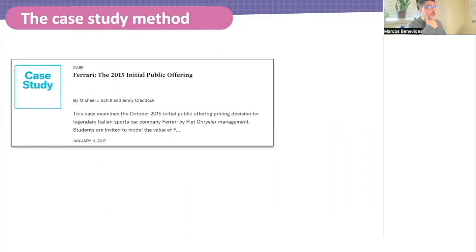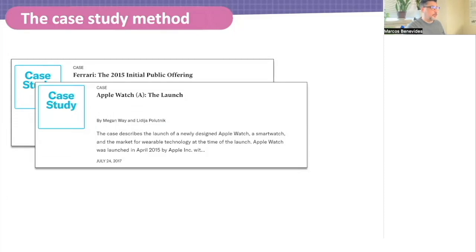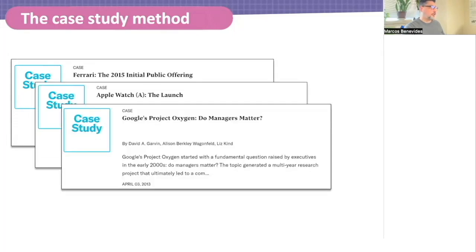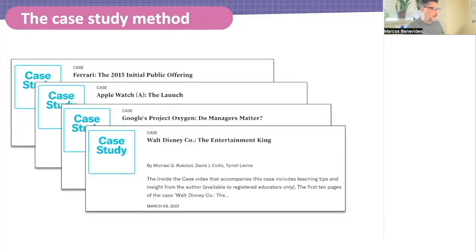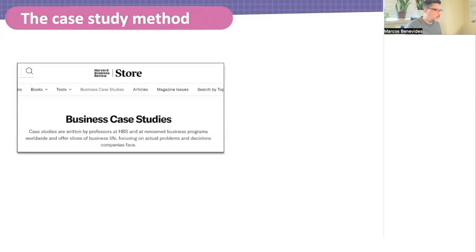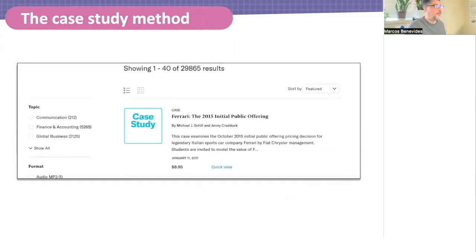What Harvard Business School does now, in fact, they offer these case examples that can be downloaded. They can be purchased and downloaded from them. And they're excellent. For example, the IPO for Ferrari and how that was implemented. The Apple Watch is a popular one. Google's Project Oxygen. And so on, many different kinds of cases. If you look, for example, at the Ferrari IPO example, it costs about $9 to download and you get all of the materials that you need for the classroom.